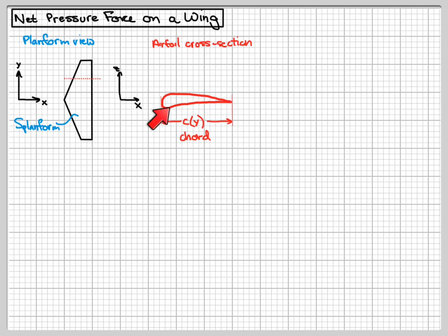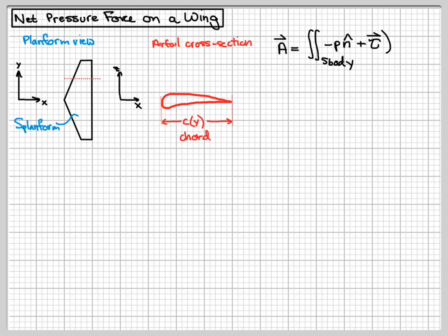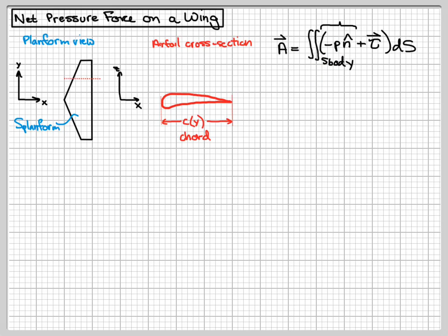The aerodynamic force relationship is that the force due to aerodynamics is the integral of the pressure force, which is minus P n-hat, plus the viscous stress contribution, which we label as the tau vector, integrated over the entire body. That gives us the aerodynamic force. I'm going to break that into two contributions: the pressure force A_P and the viscous force A_tau. In the notes, bold face notation is used for vector quantities; we'll use an arrow over the top in handwritten notes. The hat notation indicates a unit vector, so N-hat is a unit length vector.